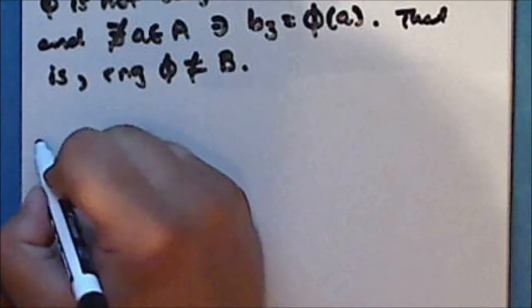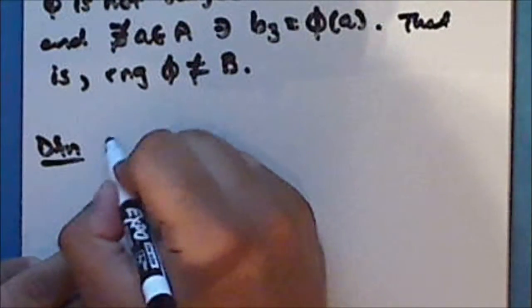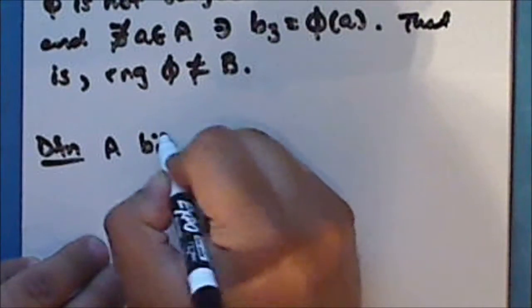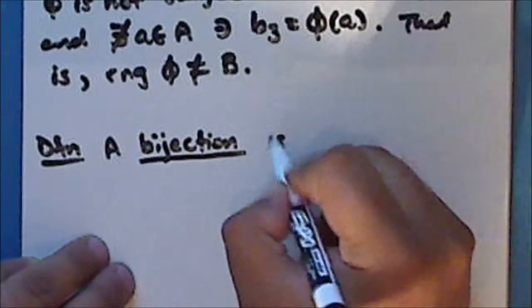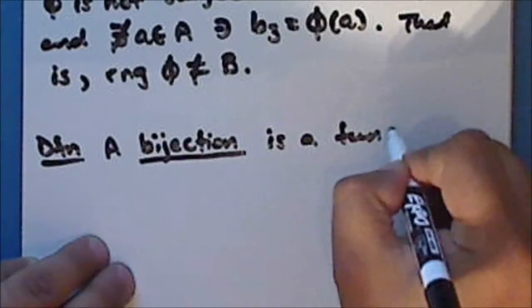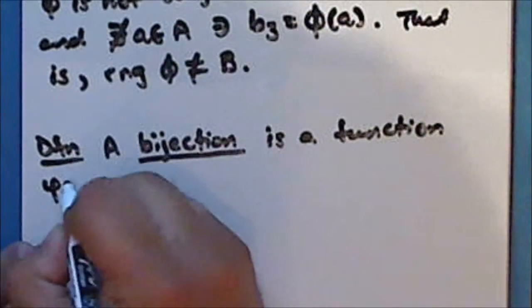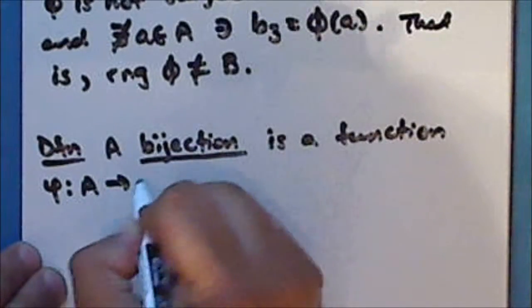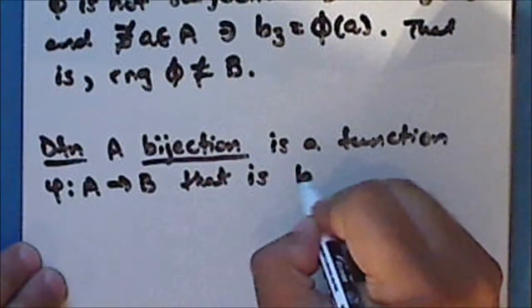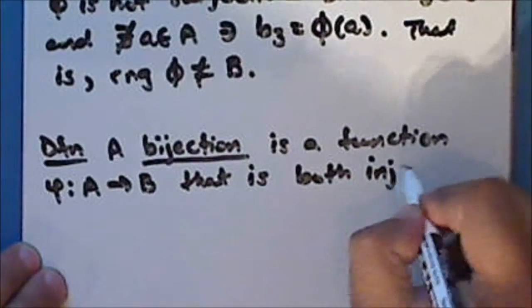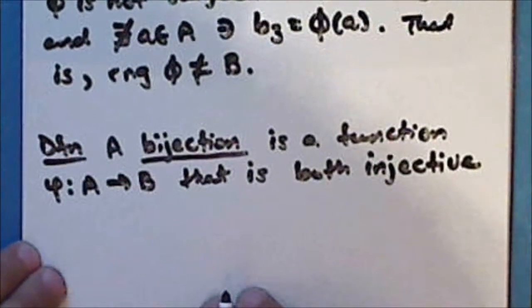New definition: a bijection is a function φ mapping a set A into a set B that is both injective and surjective.